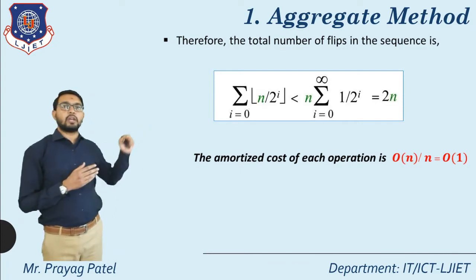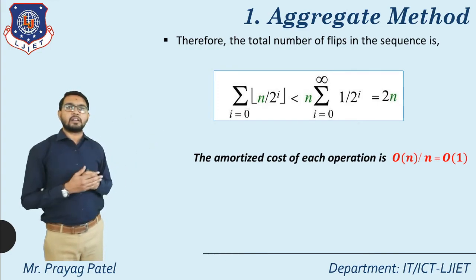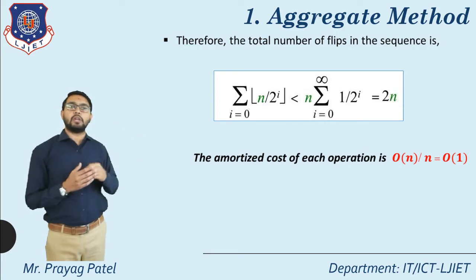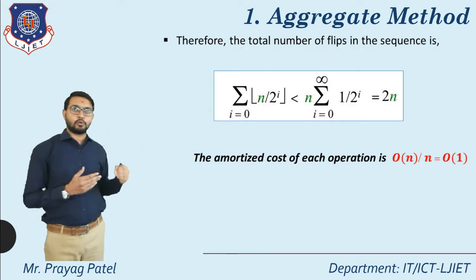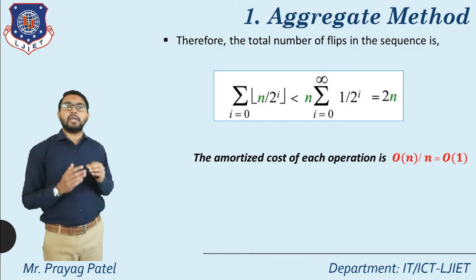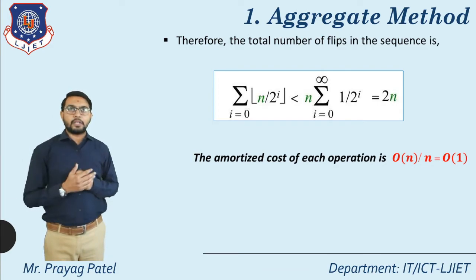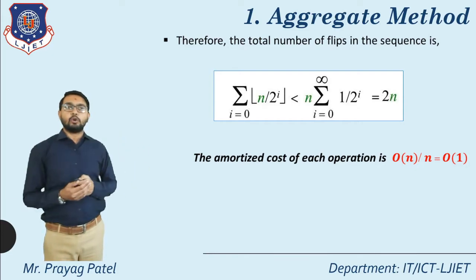Solving the equation: sigma from i=0 to k−1 of n/2^i. Taking k as infinite and n as a constant, sigma from i=0 to infinity of 1/2^i is approximately 2 (since 0.5 + 0.25 + 0.125 + ... converges to 2). So the final answer is 2n, and the complexity is O(n). For performing n operations the time is O(n), so for a single operation the amortized time is O(n)/n = O(1).